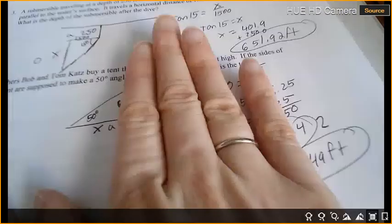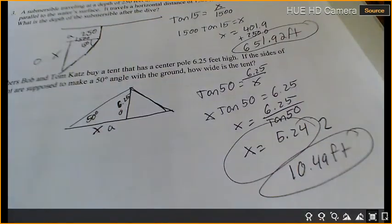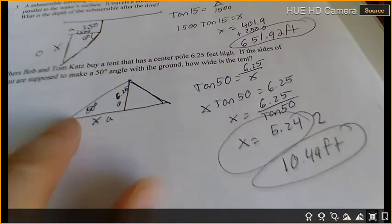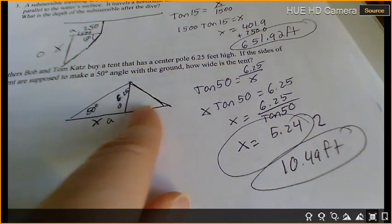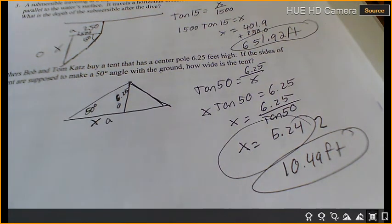Because it's only half. You don't see a tent that's at a right angle like that. Tents usually look like this with the center pole in the middle, so we only have half. So we have to times it by two to get the other half, because we want to know the whole width. Okay, the back is your homework.